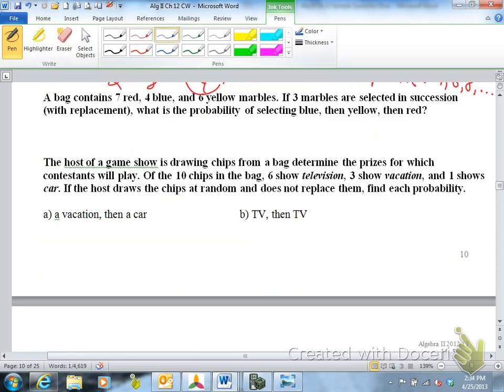We have a bag contains seven red, four blue, six yellow marbles. If three marbles are selected in succession, in succession means one after the other, in order. Pick one, pick one, pick one, in succession. With replacement, it's important that you notice with replacement, that means you're putting the marble back in the bag after you pick the marble. What's the probability of selecting a blue, then a yellow, then a red? So see if you can answer that.